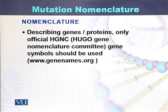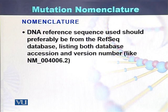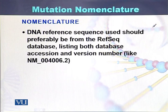While describing mutation nomenclature, genes and proteins should use symbols assigned by the HUGO Gene Nomenclature Committee (HGNC). The DNA reference sequence used should preferably come from established reference sequence databases, which are listed in the form of accession numbers and version numbers.